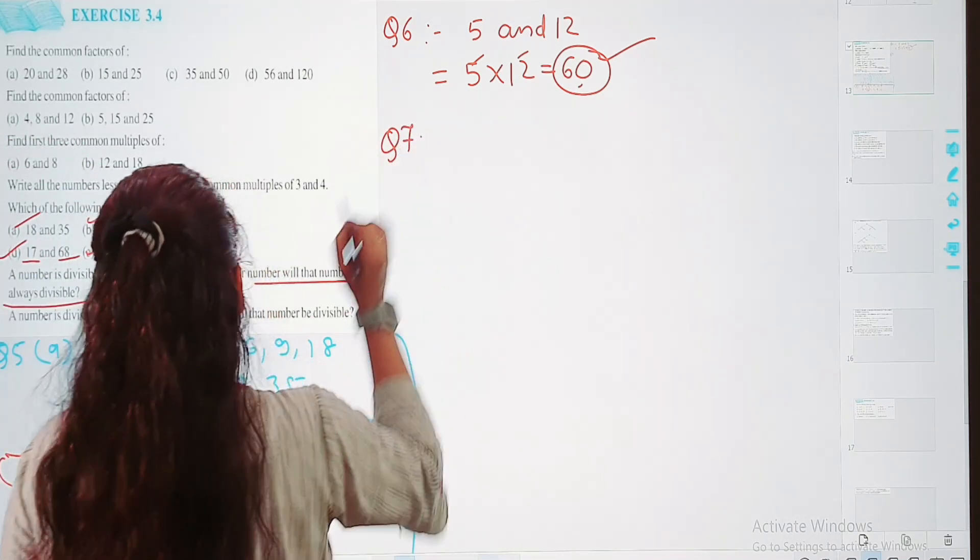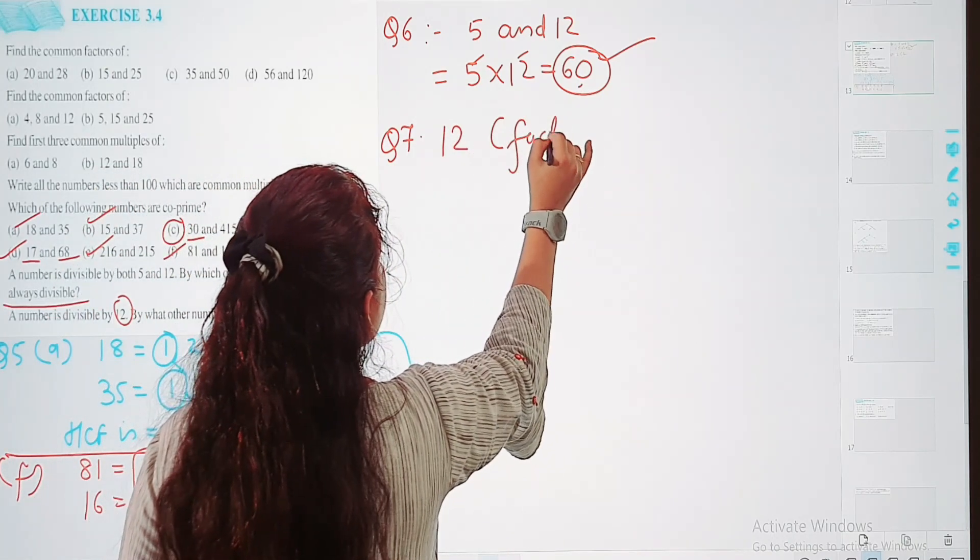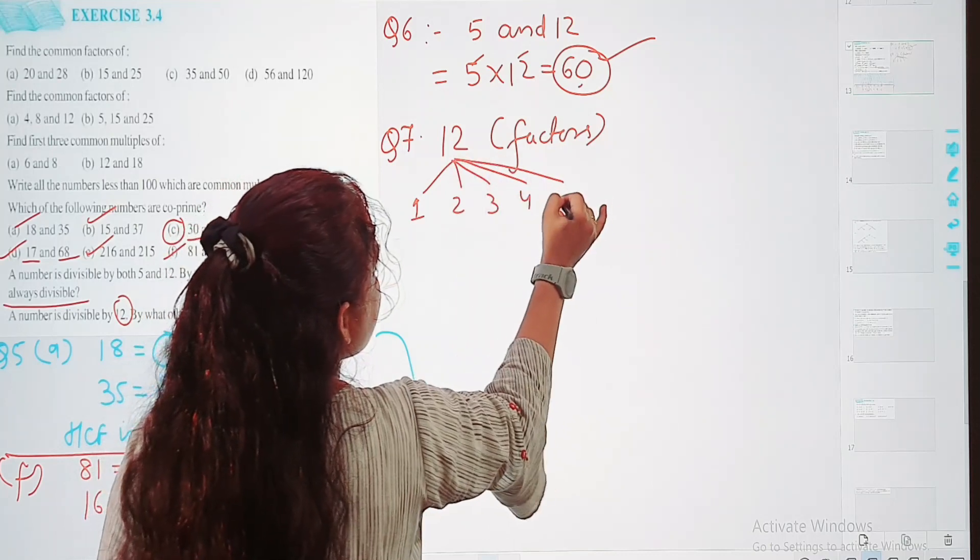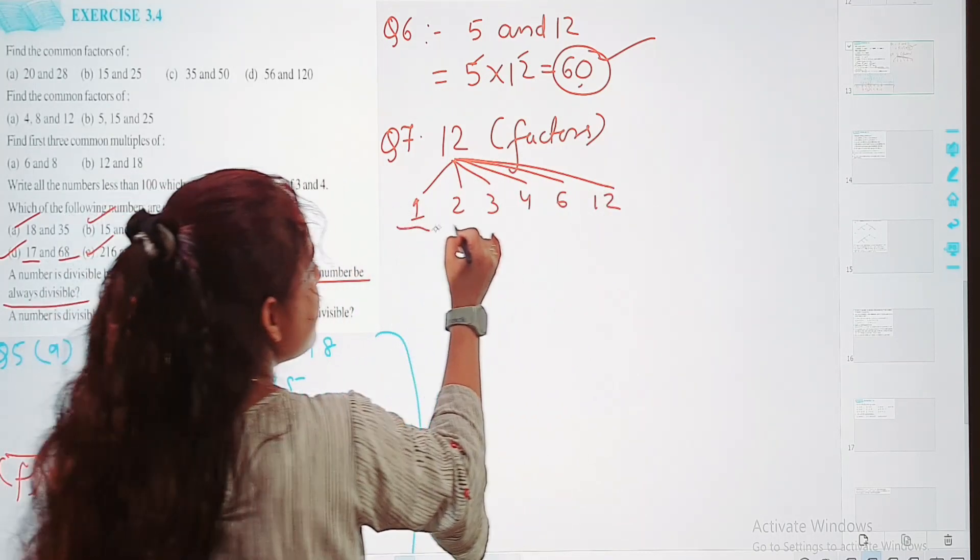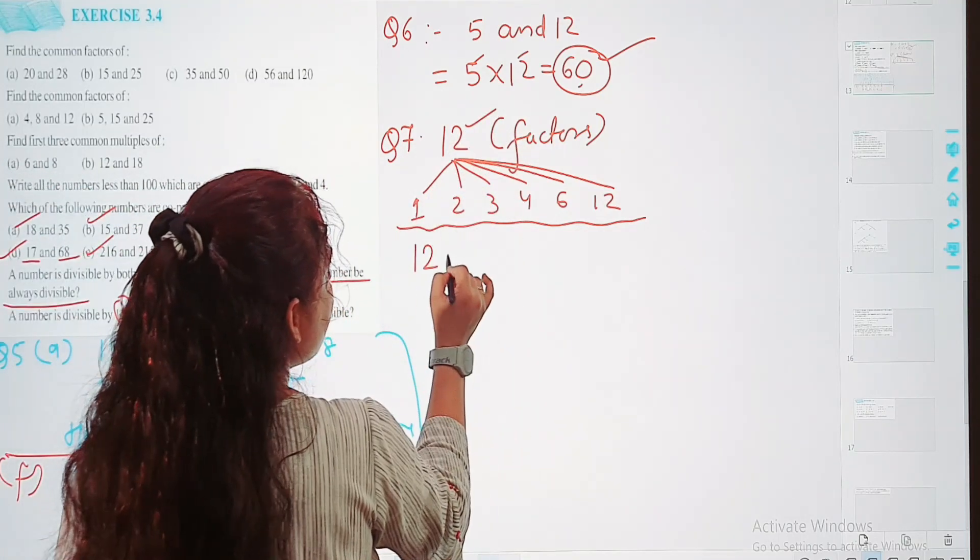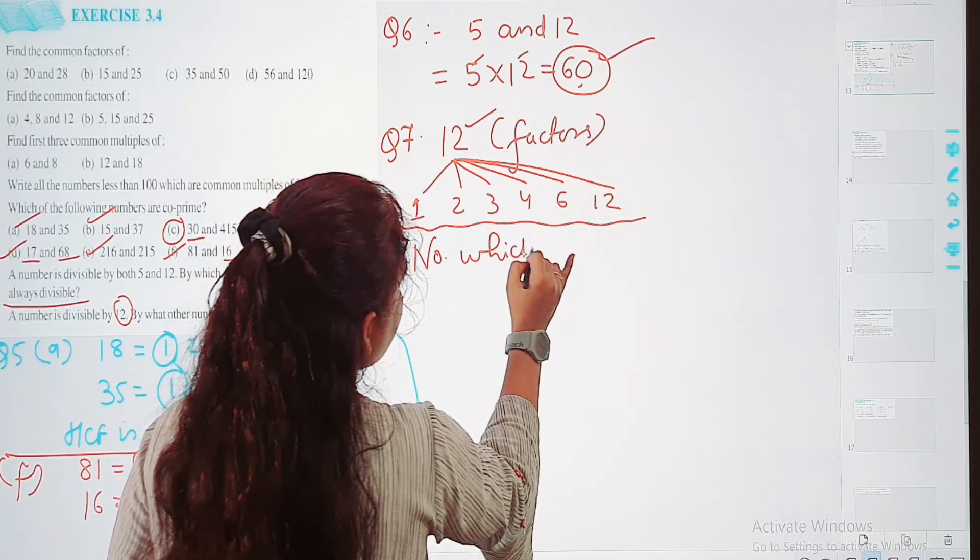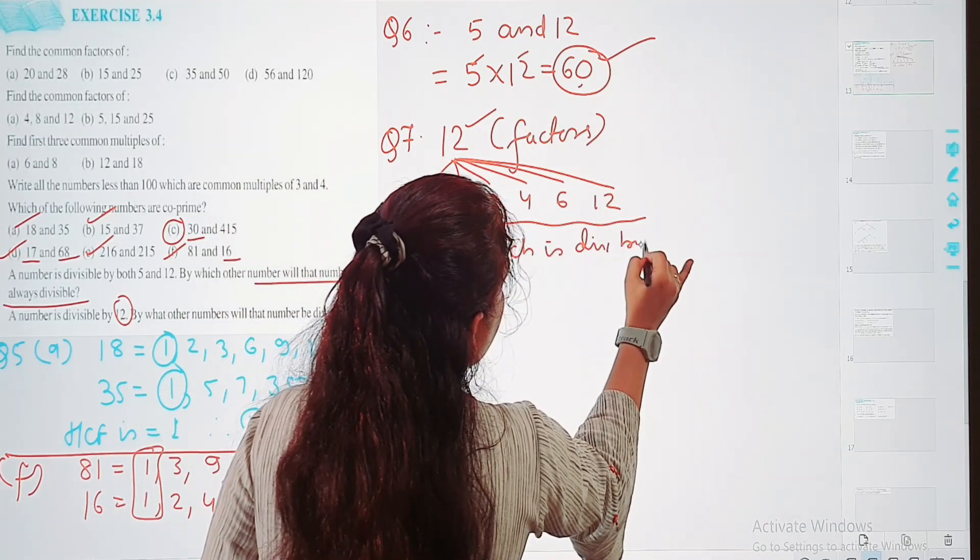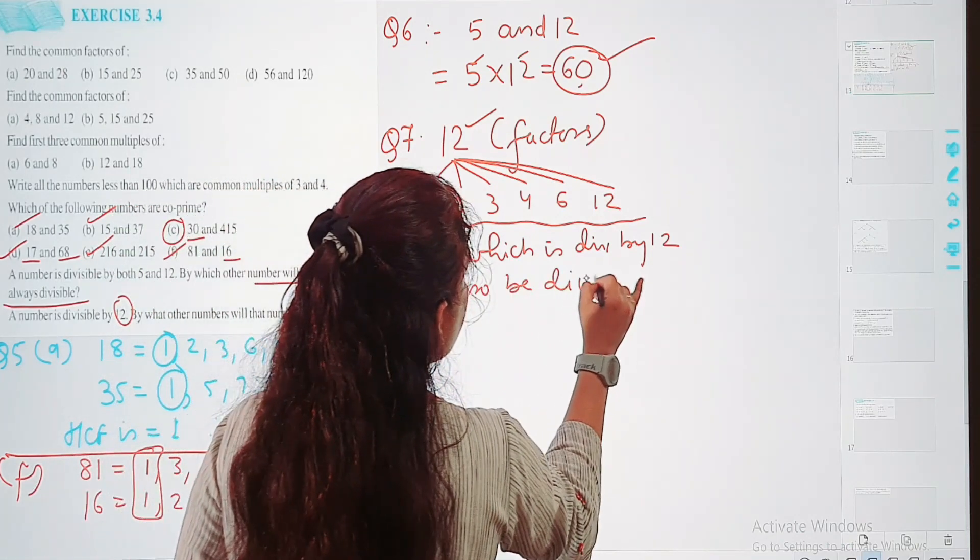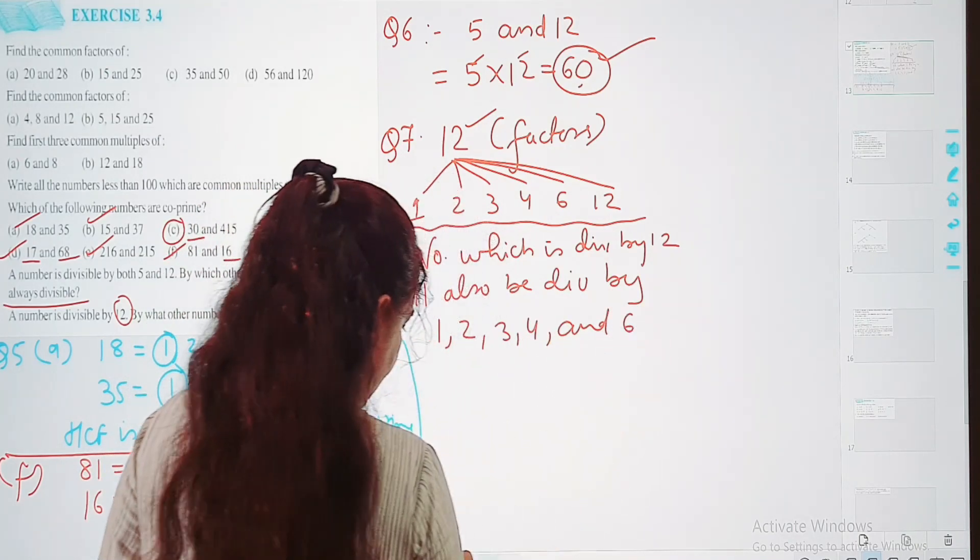Ab question number 7 lelete hai. Kya bhol raha hai? Eek number hai joh divisible hai 12 se. Factors of 12 kya kya ho te hai? Iske factors kya hai: 1, 2, 3, 4, 6, aur apne aap me 12 bhi hai. So in sub number se bhi woh divisible ho ga. The number which is divisible by 12 will also be divisible by 1, 2, 3, 4, and 6. Done.